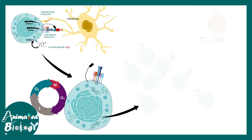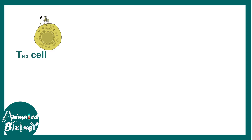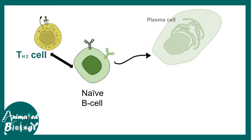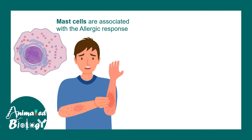Once the T helper cell is activated, it proliferates massively and eventually differentiates into the Th2 subtype. Th2 subtype cells interact with naive B cells and instruct them to differentiate into plasma cells, which secrete IgE antibodies. IgE antibodies are the key molecular players in allergic responses.